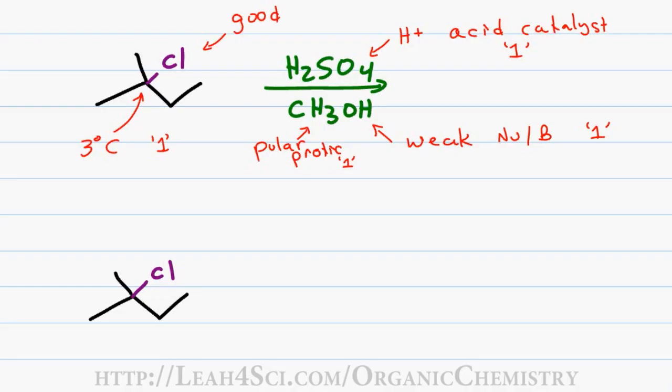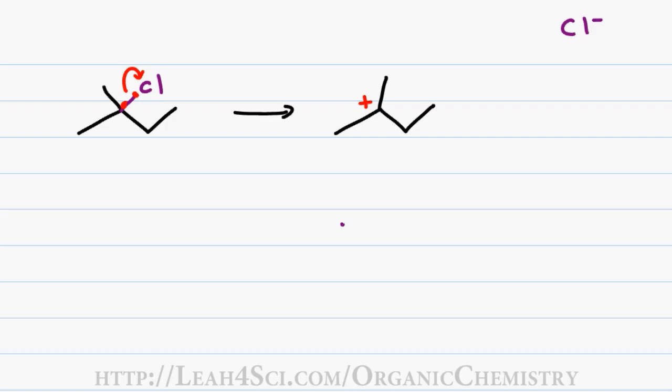For this mechanism, we'll only look at the SN1 reaction but keep in mind that E1 can take place. The reaction begins when chlorine grabs the bonding electrons away from carbon, breaking off into solution and leaving me with a positive tertiary carbocation. The Cl- is off somewhere in solution and we're left with a tertiary carbocation on our carbon chain.